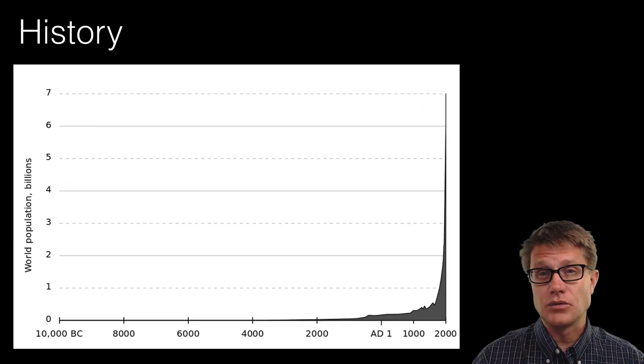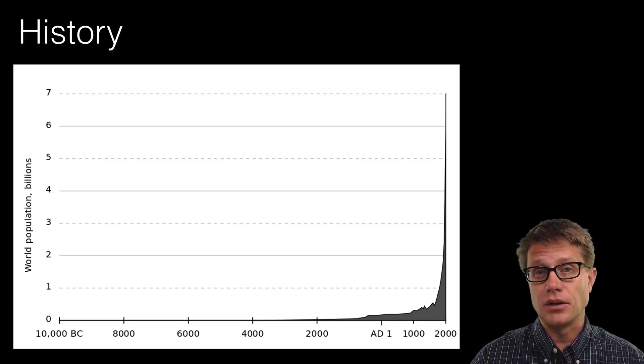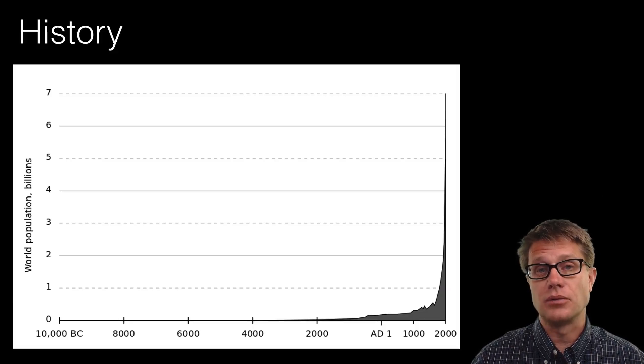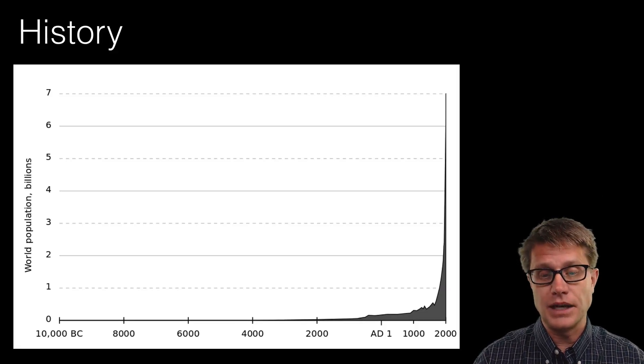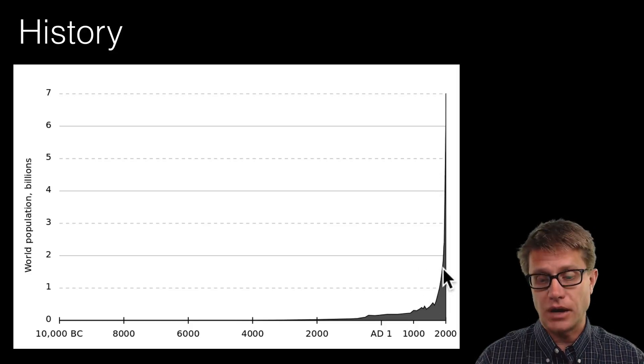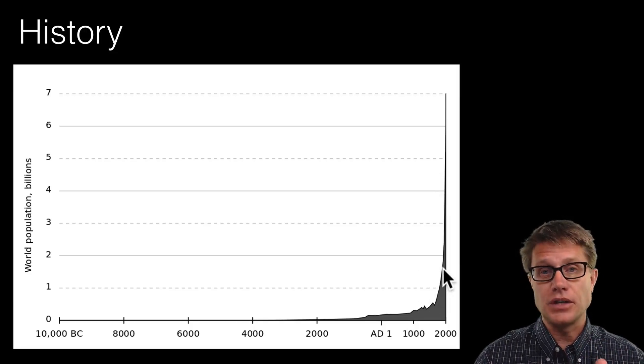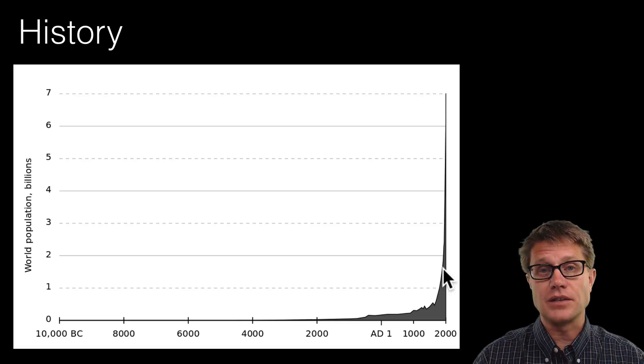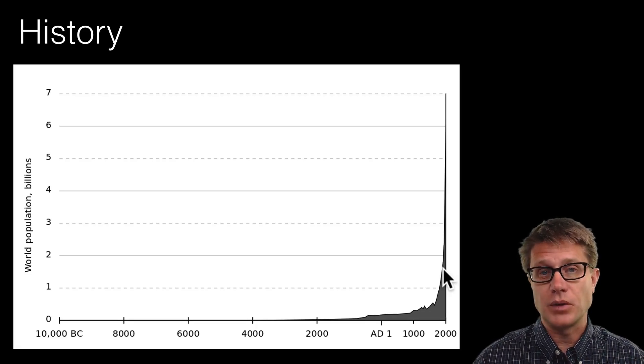We could look at the history of humans which has maintained stability over a long period of time but recently has shown exponential growth. Now what led to that is going to be industrialization. So if you have access to constant food, constant sanitation, good medicine, we see an increase in the population.